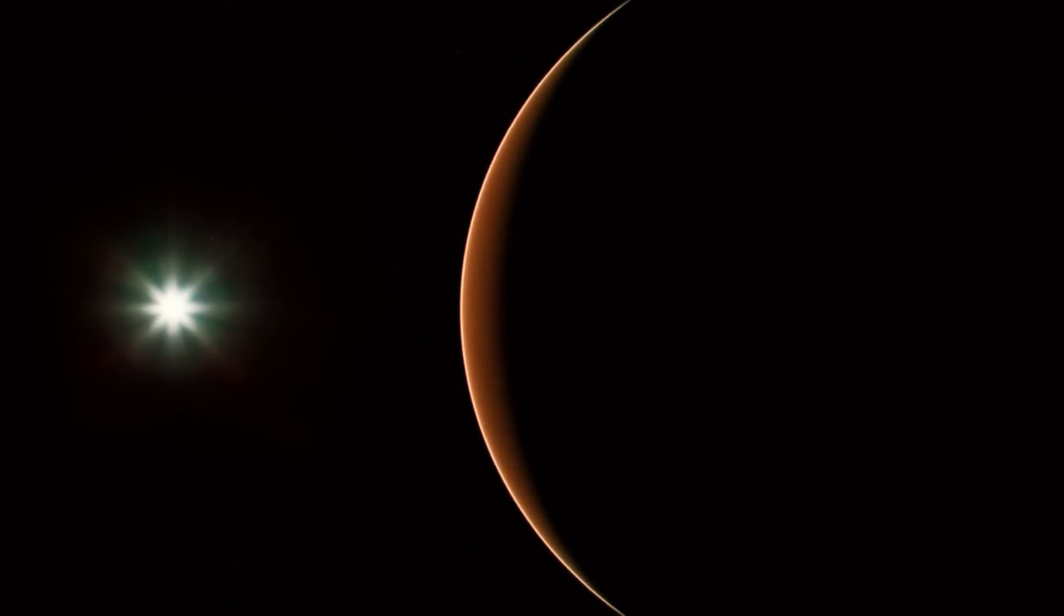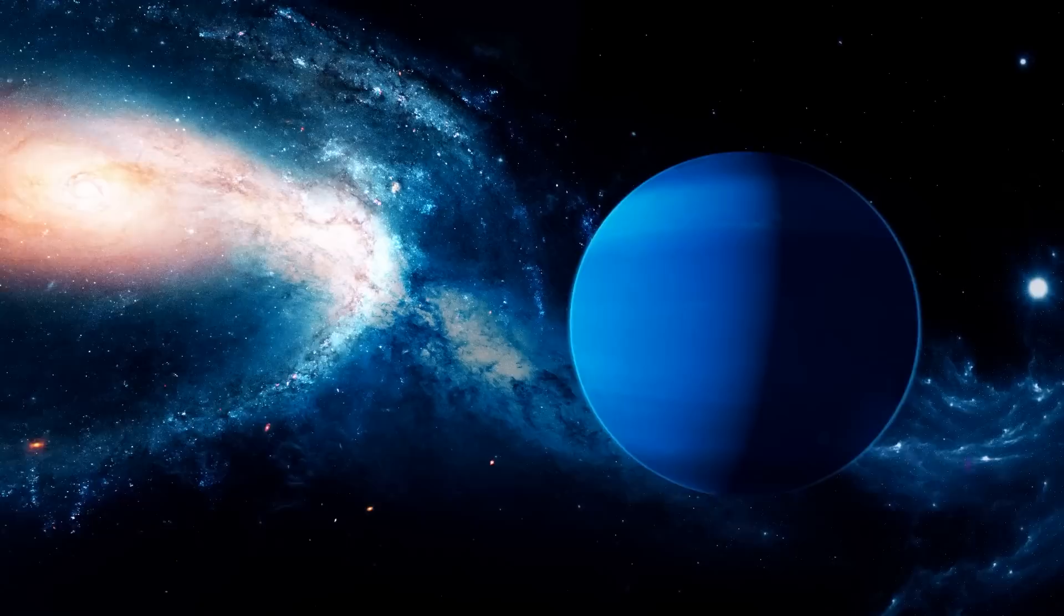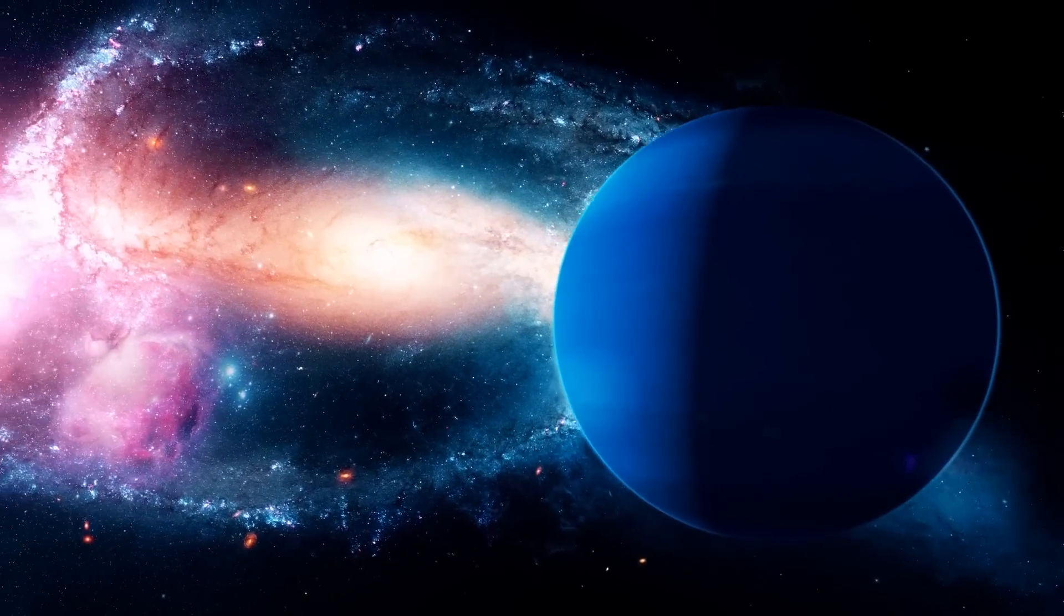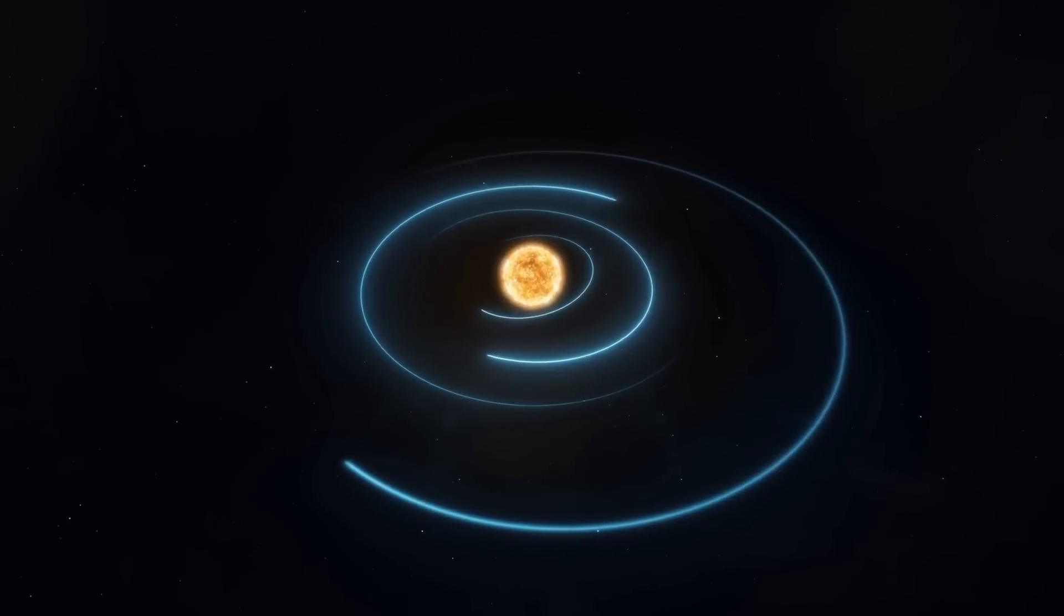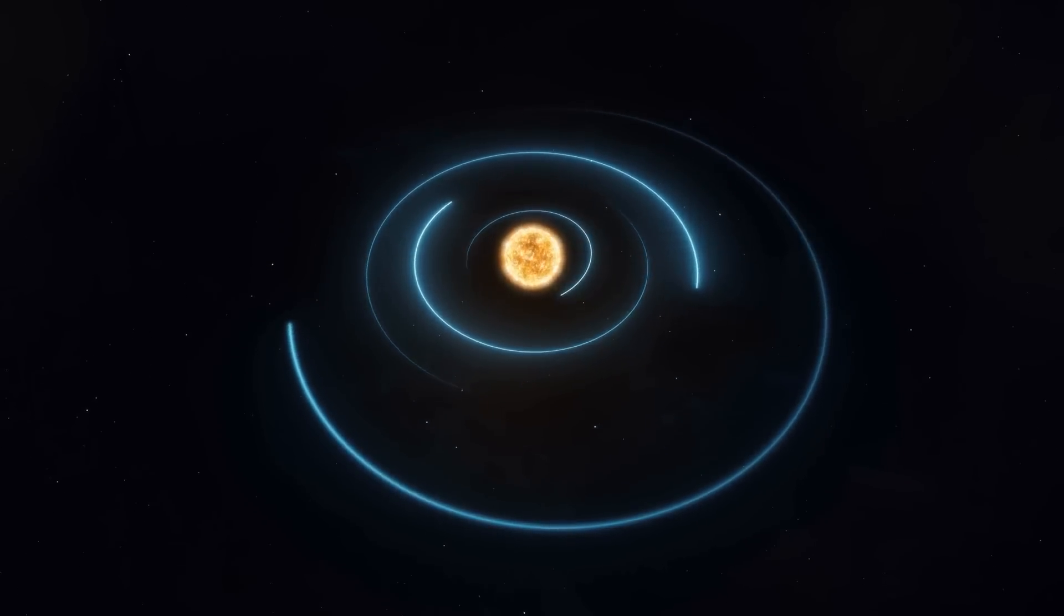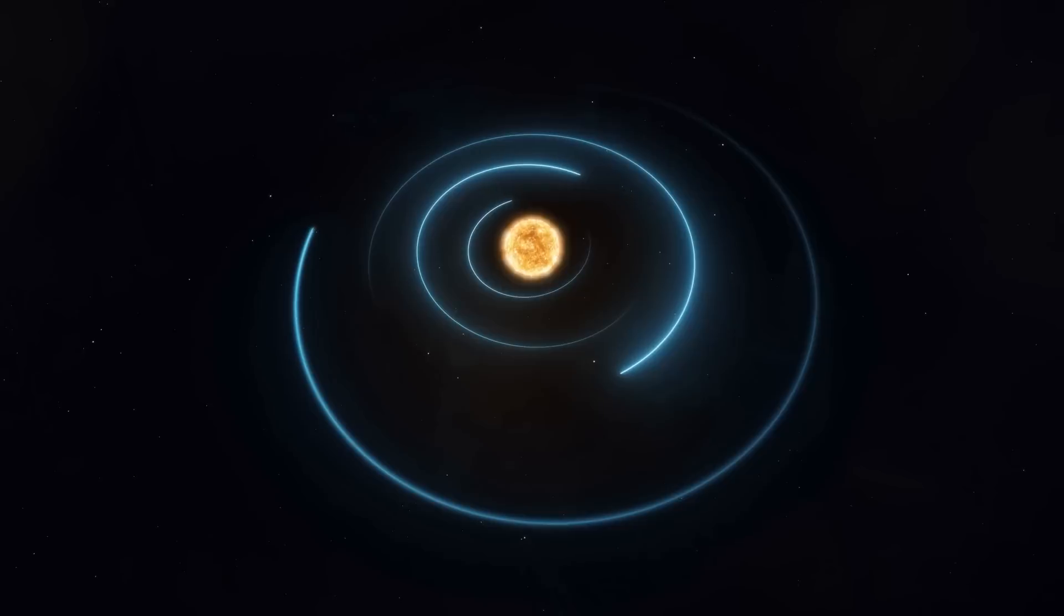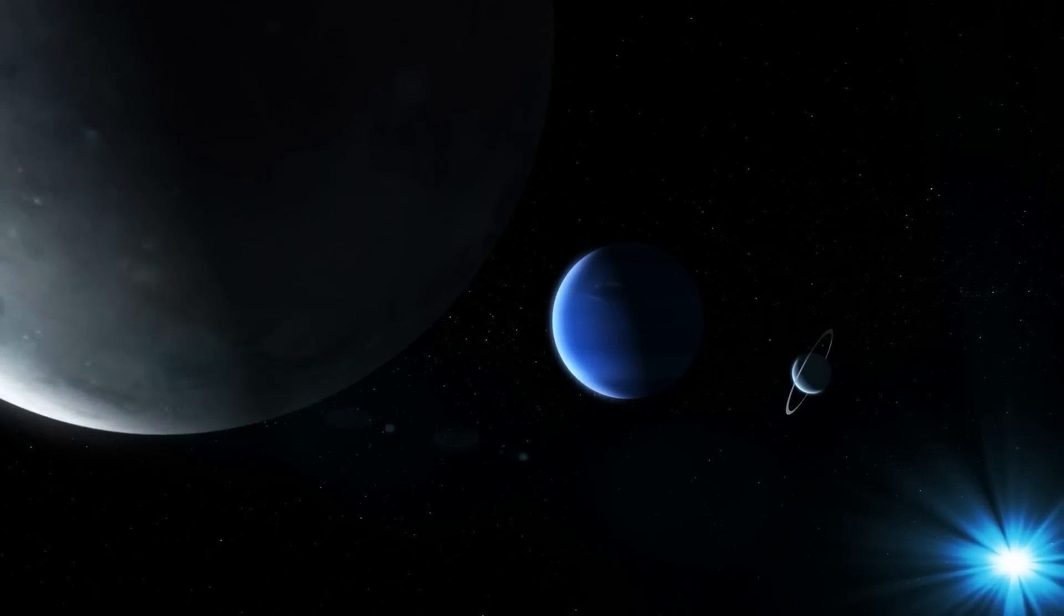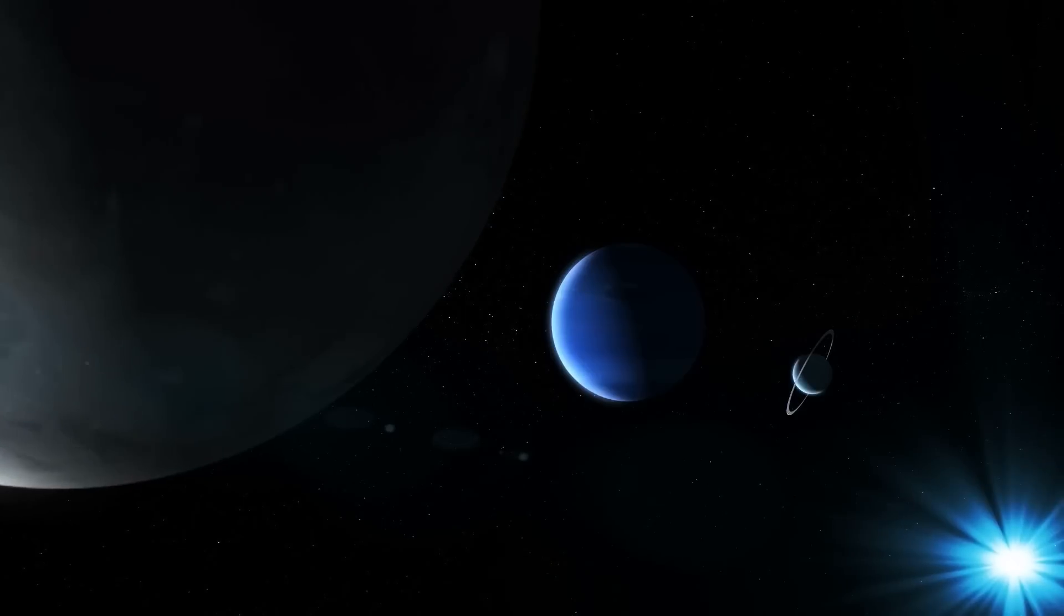The orbit of the potential ninth planet must be very unusual. According to California scientists, it is 20 times farther from the Sun than Neptune due to a strong ellipse. The planet moves incredibly far away from the Sun, then periodically comes a little closer to it. Planet Nine's orbit may even take it outside the previously known boundaries of the solar system.